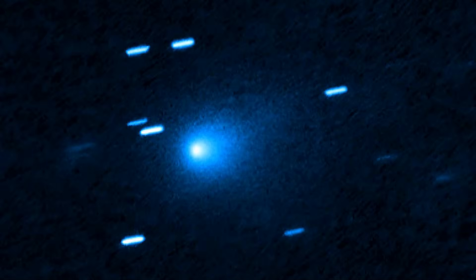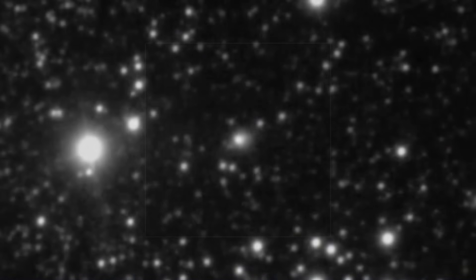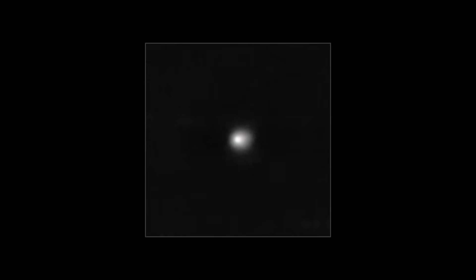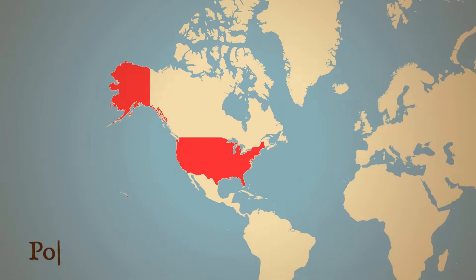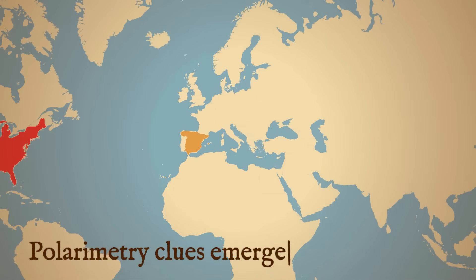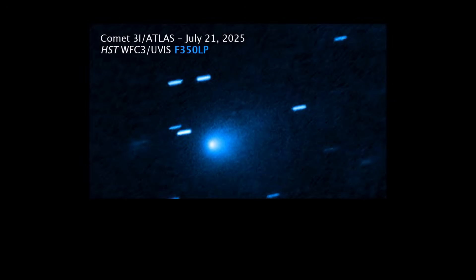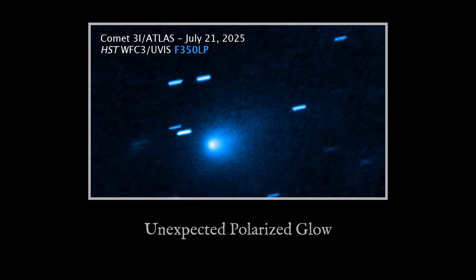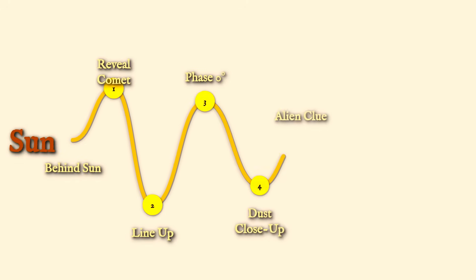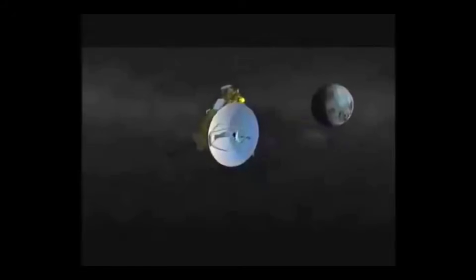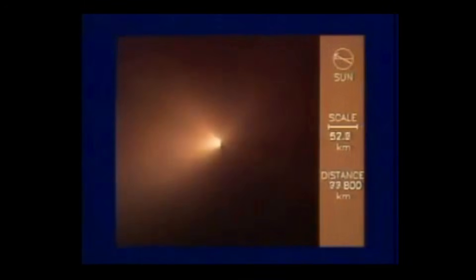Light from 3I Atlas doesn't just tell us about its color, it carries the fingerprint of the dust and ice swirling through its coma. Polarimetric measurements taken from observatories in Spain and Bulgaria reveal something few comets have ever shown: a strong negative polarization branch at small phase angles. In plain terms, the scattered sunlight is more polarized in the opposite direction than expected, especially when the comet sits nearly between the Earth and the Sun. This effect is most pronounced in objects with extremely fine, icy grains, often seen in the distant Kuiper belt, but almost never in bright active comets passing close by.